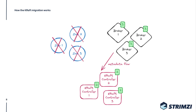This is in general how the KRaft migration works: many different upgrades to brokers first and controllers second — connection details, the ZooKeeper migration flag, controller connection details — and rolling the brokers first, then the controllers one or more times. It is not a simple procedure, but that is how it works.